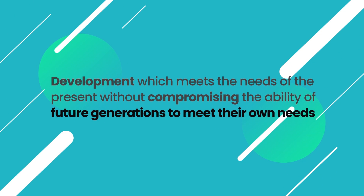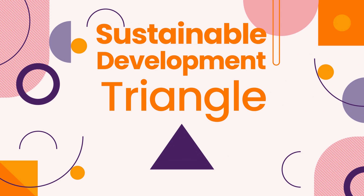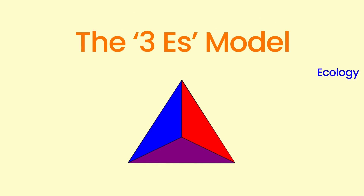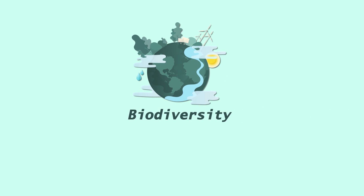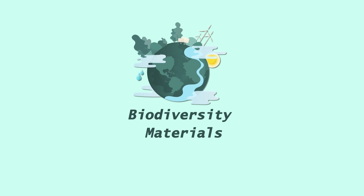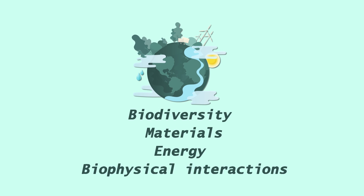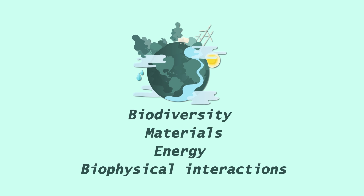On the basis of this, sustainable development can be defined and the definition from the Brundtland Report can be provided and discussed with students. The sustainable development triangle can be discussed — the 3E model: ecology, economy, and equity. What elements are included in the environment area? It may include biodiversity, materials, flow of energy, biophysical interaction, the relationship and importance of all these things.